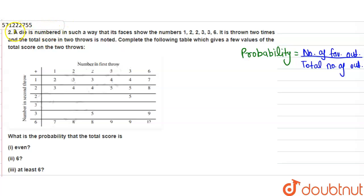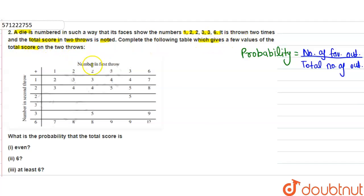Hello everyone. In this question, a dice is numbered in such a way that the faces show the numbers 1, 2, 2, 3, 3, 6. It is thrown two times and the total score in the two throws is noted. Now complete the following table which gives a few values of the total score of the two throws.